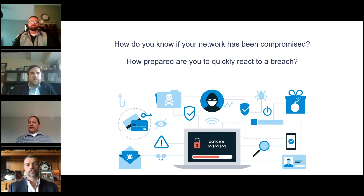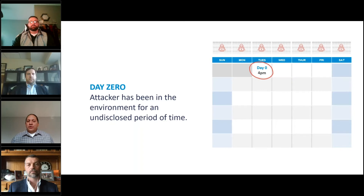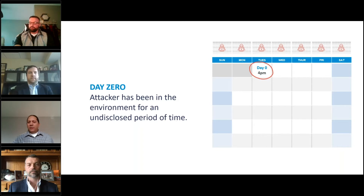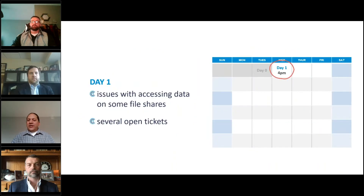How do you know if your network has been compromised? How prepared are you to quickly react to a breach? The first four classes talked a lot about preparation — and the quality of your response will be largely based on the preparation you put into it. Here we are at day zero: the attacker has been in the environment for an undisclosed period of time. Chris Pruitt is playing the CISO of our company, managing the environment and unaware of what's going on. Ronnie will eventually come in as our IR team leader and Colin as our breach coach.